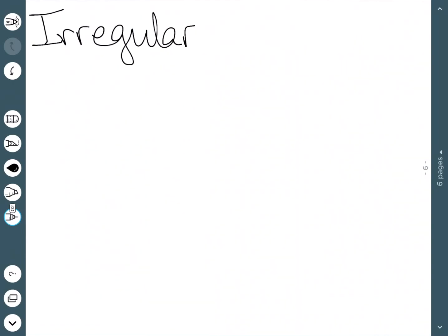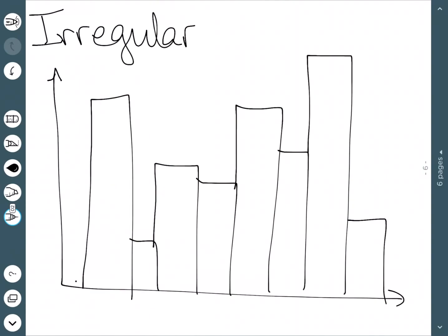The final shape we'll look at is called irregular, also sometimes called random. Here's an irregular distribution. The main thing is there's no real shape or pattern. It looks quite irregular.